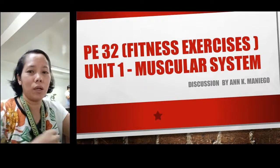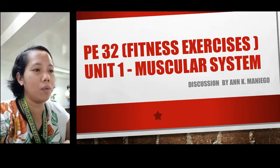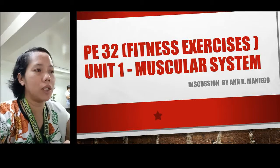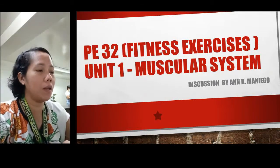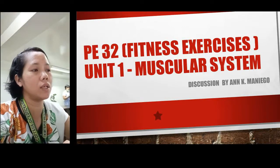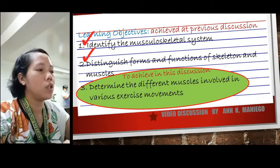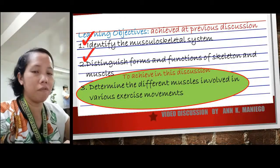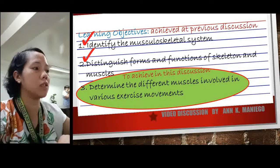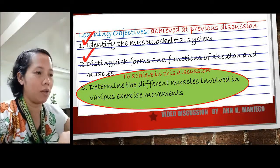Good afternoon everyone. Welcome to another discussion. Still on unit 1 but now we are in the muscular system. Let's review our learning objectives from last time. We have three objectives, and for our last discussion, objectives number 1 and 2 have already been accomplished. So we are now achieving learning objective number 3, which is to determine the different muscles involved in the various exercise movements as we are in the muscular system already.